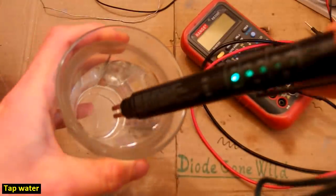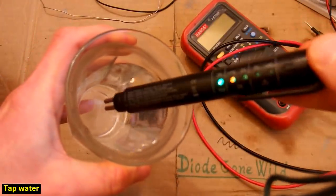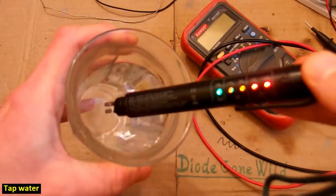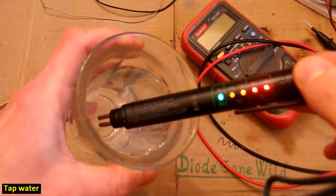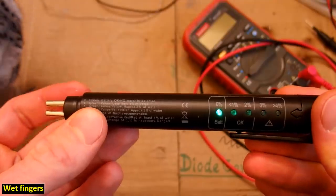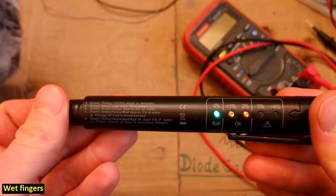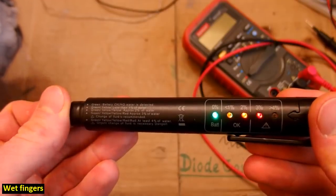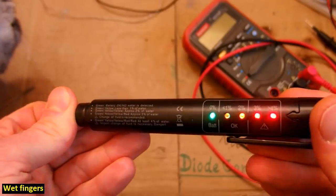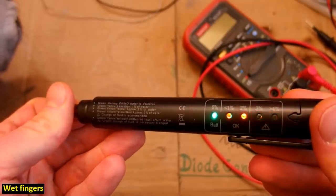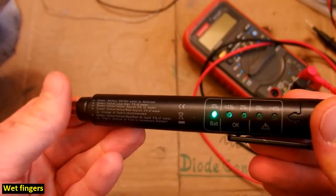But now it seems to work and in water it actually shows 5 LEDs. And when I touch it 2, 3, 4, 5 LEDs depending on how much I press the electrodes.